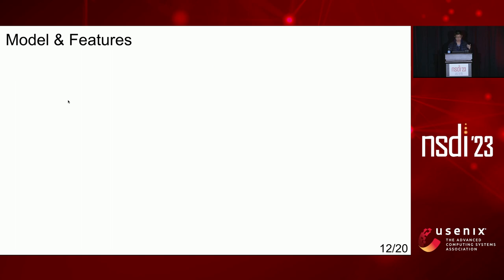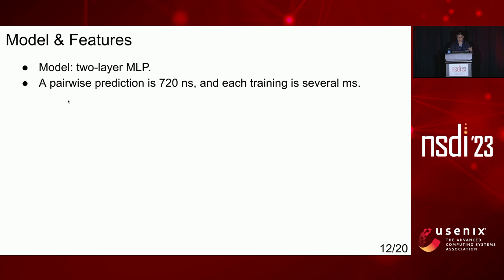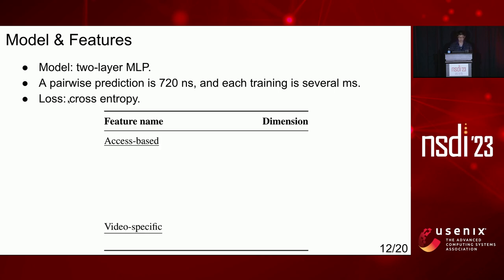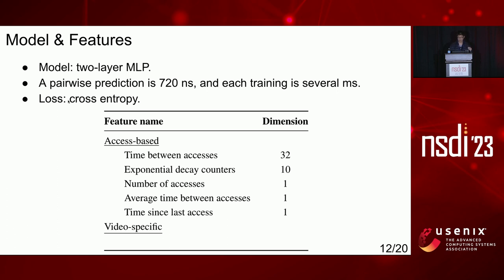The model we use is a lightweight two-layer MLP. A pairwise prediction takes 720 nanoseconds, and each training step takes several milliseconds. The loss we use is cross-entropy. The features include access-based features and video-specific features. Access-based features are derived from access history — for example, time-between-access to track short-term request rates and an exponential decay counter to track long-term request rates. The end-of-chunk feature for video-specific features was discovered in the previous production algorithm. Because clients issue range requests sequentially as video is watched sequentially, after a client requests the last byte of a chunk, it is less likely to fetch the same chunk again.